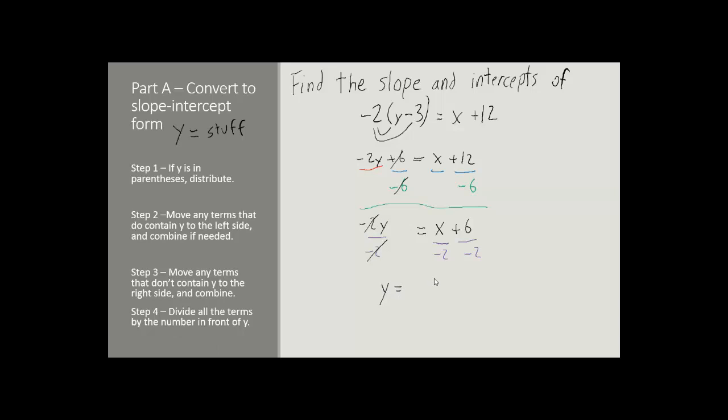Now we simply need to simplify the right side. We have x over negative 2 for our next term. Now in this class, they don't like you to put negatives on the bottom, so we'll rewrite that as negative x divided by 2. And then our third term. Positive 6 divided by 2 gives us negative 3.